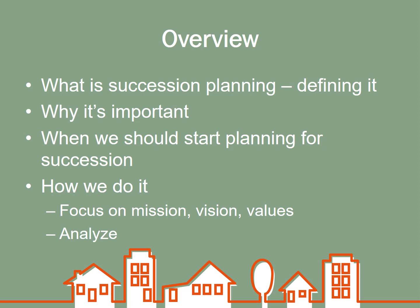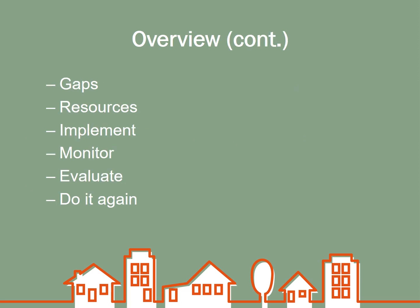We're going to focus on the mission, vision, and values — this is always your north star, your guiding light, the foundation of what your organization does. Then we'll move into the analysis: we're going to identify some gaps in what our organizations are doing and where they're going in the future, look at the resources we need to get to where we want to be, how we implement those things, and then how we monitor and evaluate. This is an iterative process — something you'll do periodically, maybe once a year, once every couple of years, definitely every five years.